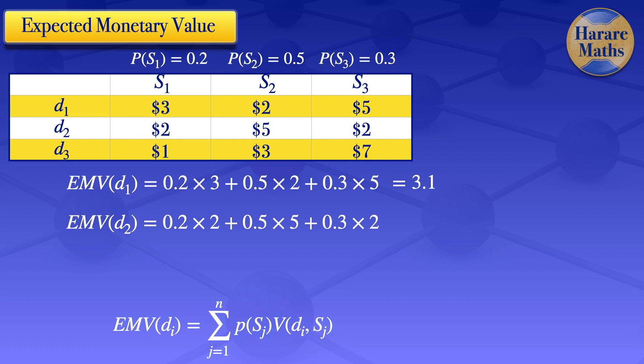The expected monetary value of decision number 2 is: the probability of S1, 0.2, times the payoff which is 2, plus the probability of S2, 0.5, times the payoff which is 5, plus the probability of S3, 0.3, multiplied by the corresponding payoff which is 0. This gives us 3.5.